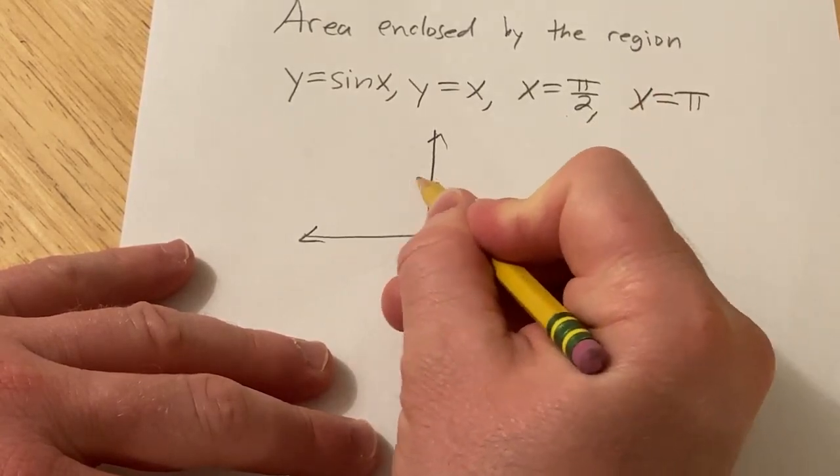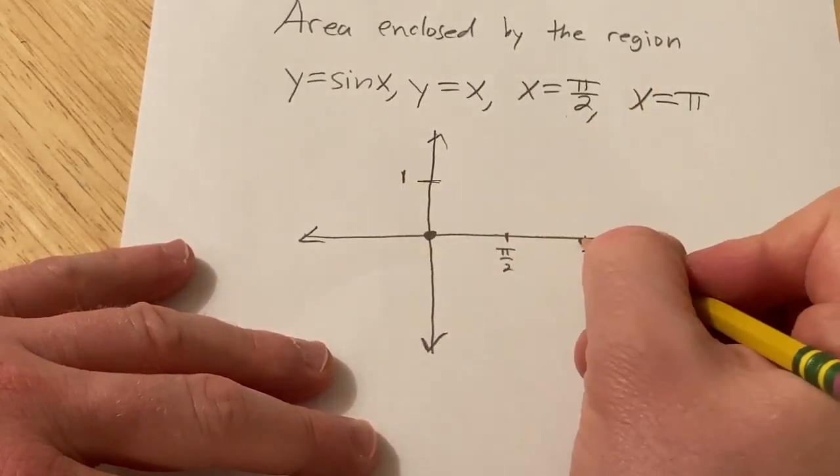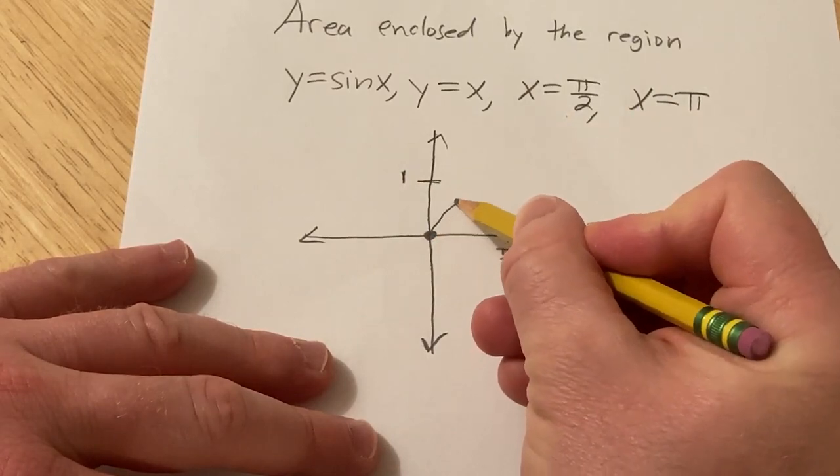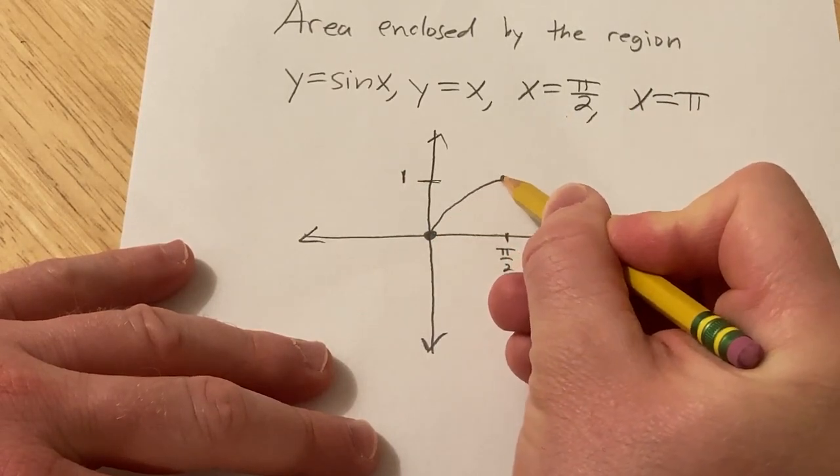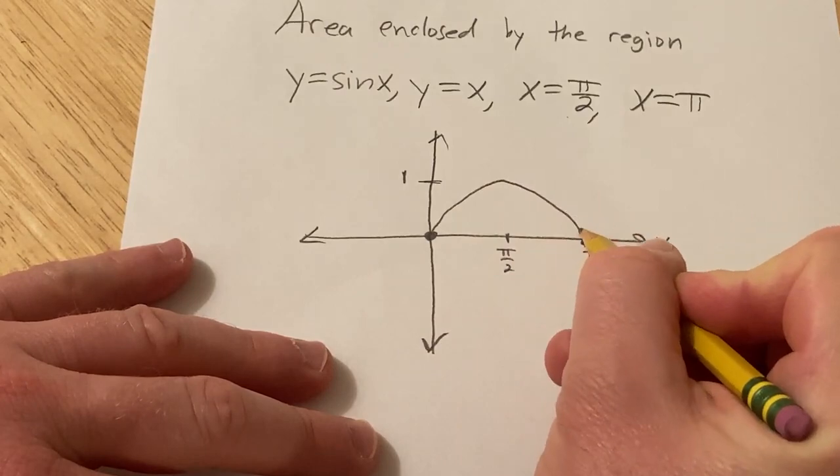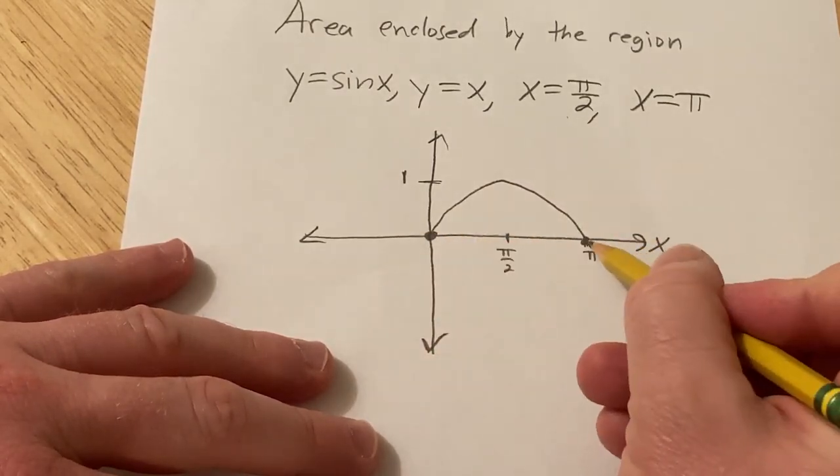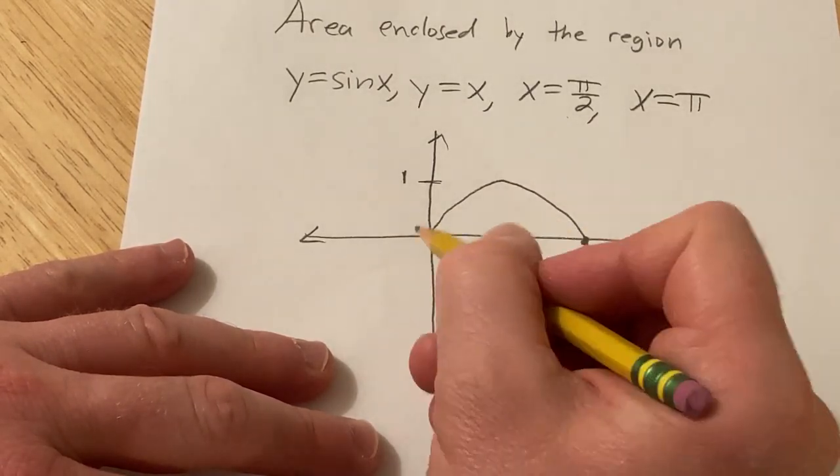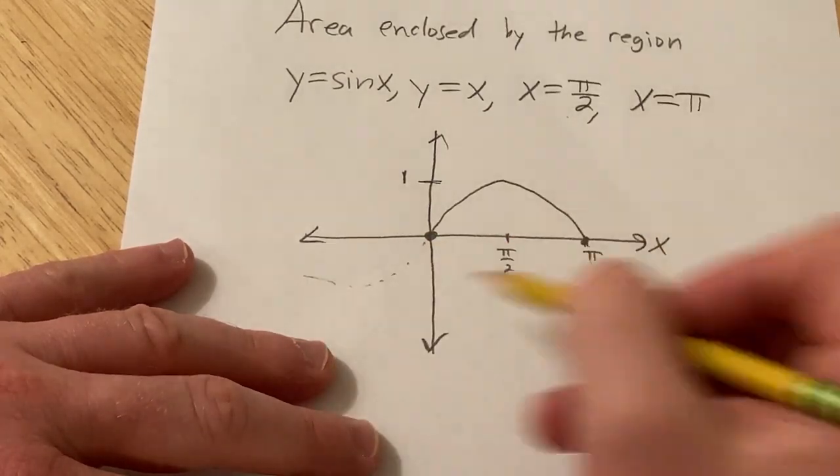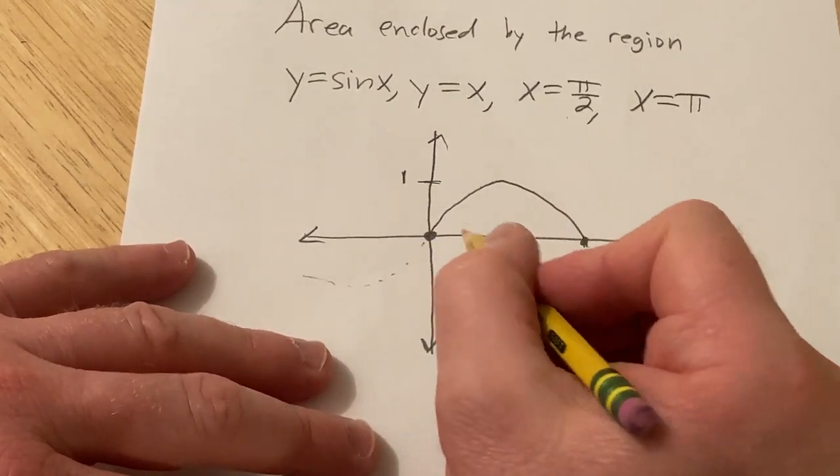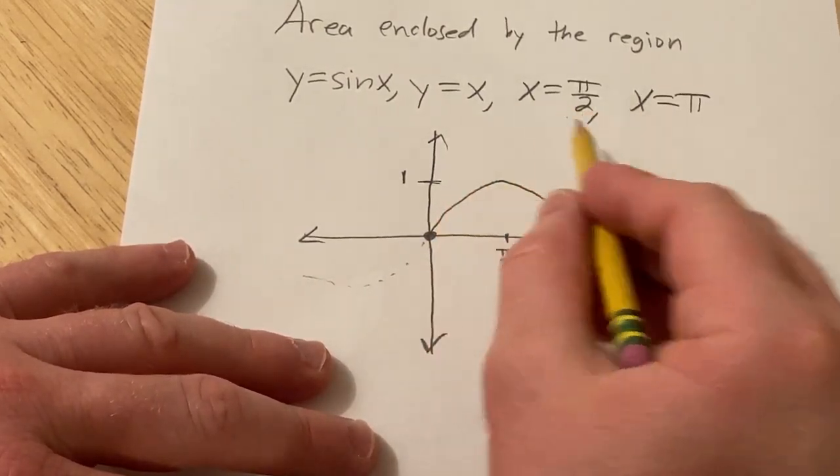So sine of pi over 2 is 1, and sine of pi is 0. So it's going to do something like this. It's a maximum at 1, and then it comes back down. Obviously the sine function keeps going, it keeps going like this, it goes on forever, it's periodic with period 2 pi, so it does keep going forever.